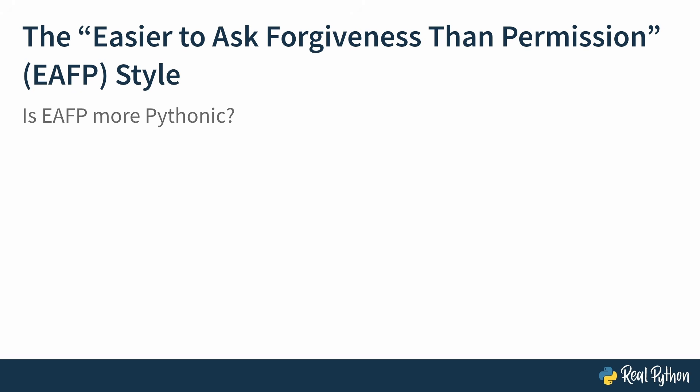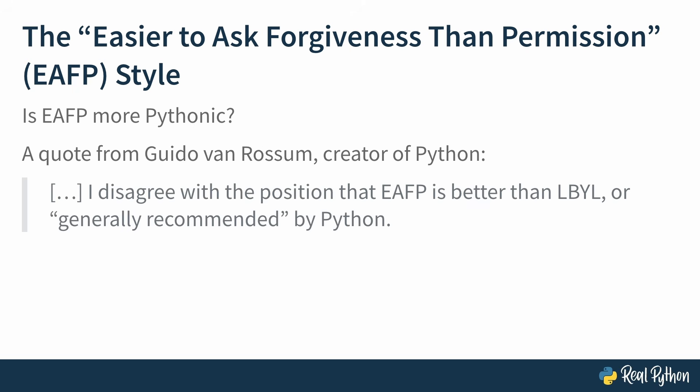Now, since try-except syntax and EAFP as a style are not available in all programming languages, you might wonder: is EAFP itself more Pythonic? I'll start with a quote from Guido Van Rossum, the creator of Python: 'I disagree with the position that EAFP is better than LBYL or generally recommended by Python.' The way he sees it — it depends. Some situations call for EAFP, while others merit LBYL. There's no such thing as one coding style to rule them all. Over the next few lessons, we'll see cases where EAFP dominates, things to watch out for when using EAFP, and finally a comparison with guidelines to help you make the right call for a given situation.